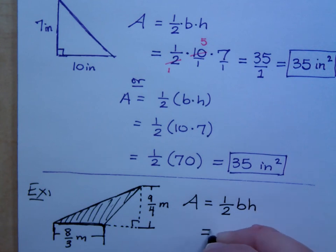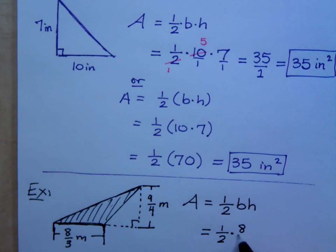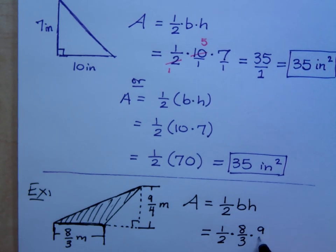Now, what I would do here is I would just go and put everything in the formula. So, you have the 1 half times what? Times 8 thirds times the height which is 9 fourths.